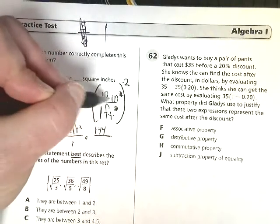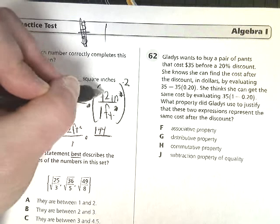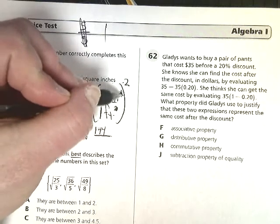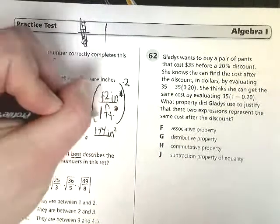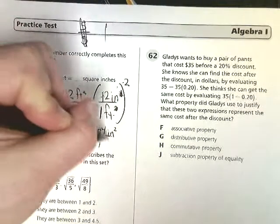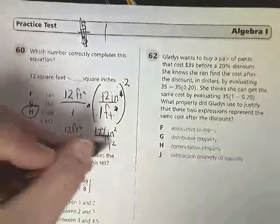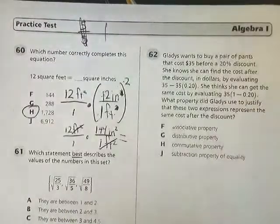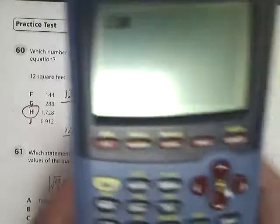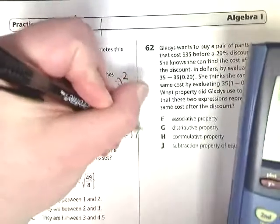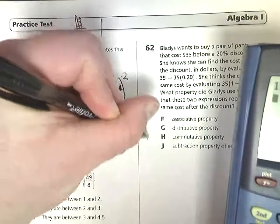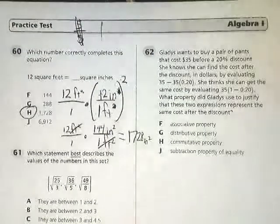And remember, when you square this term, you're just multiplying this inches to the first times 2. So this becomes inches squared. Same thing down below, 1 times 1 is still 1. So these cancel out. So what I'm left with is 12 times 144, which gives you 1728 inches squared. So my answer is still H.